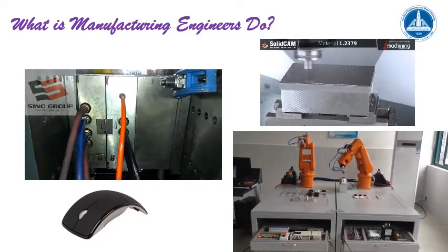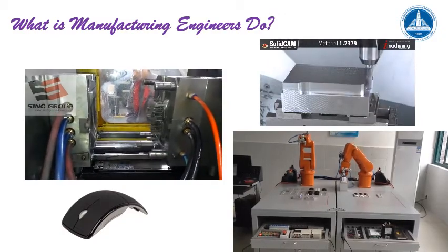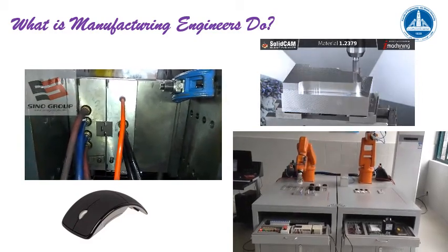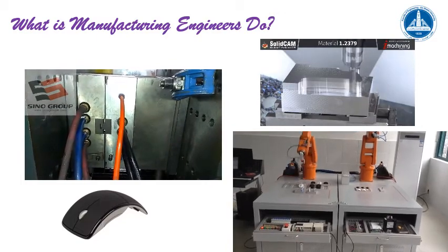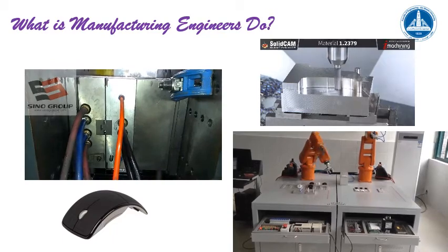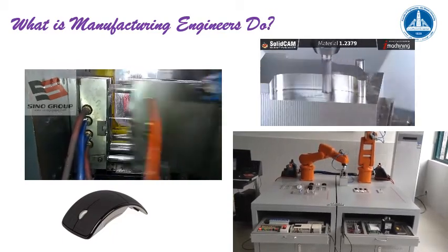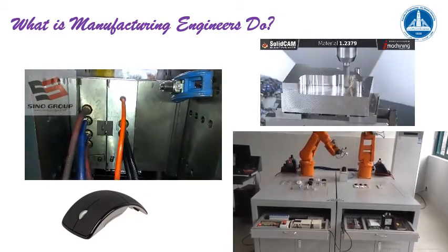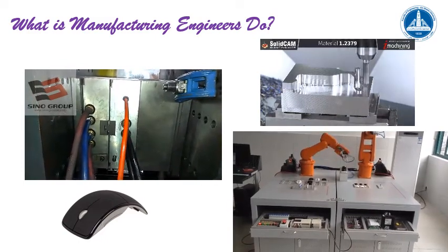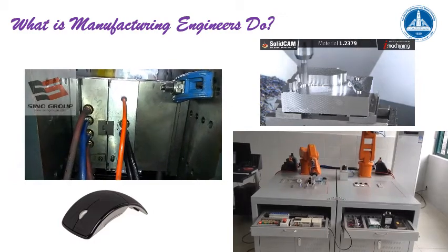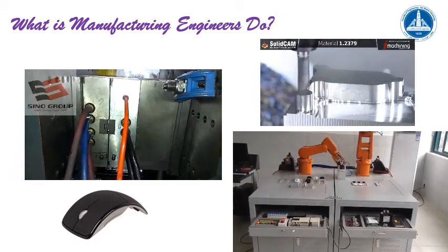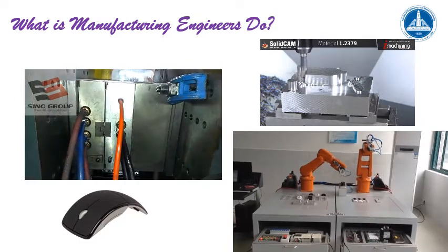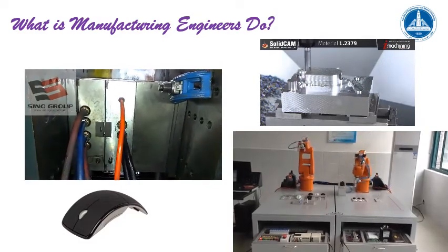Let us see an example of these processes. We have three videos running, describing how a mouse is manufactured. In the first, you can see small white plastic parts coming out of two moving molds. These plastic parts constitute the mouse. Then they are assembled using two robots participating in the assembly process.